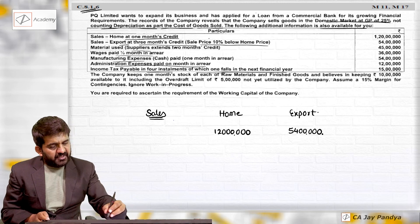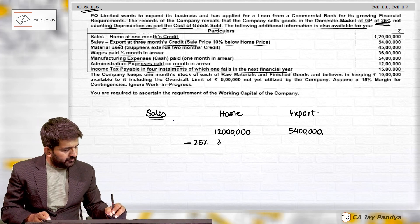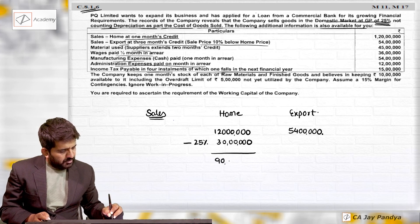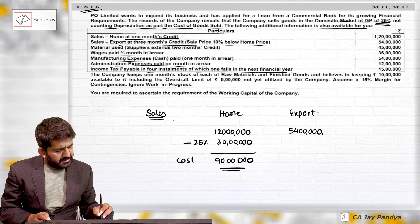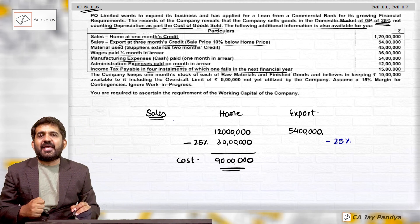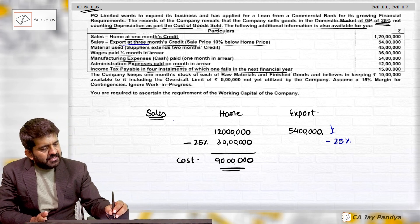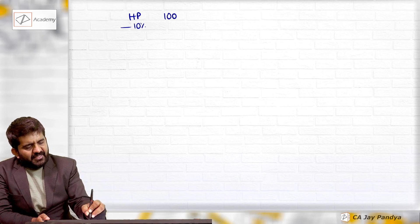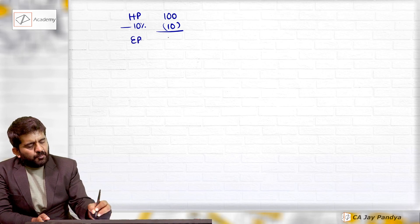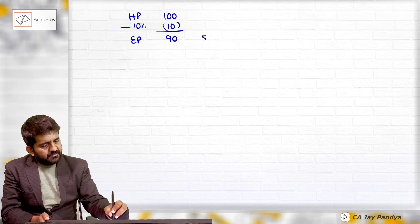Can I reduce the profit from home sales? Yes — GP of 25 percent, so cost of domestic sales is 90 lakhs. For export sales, the selling price has changed, so I need to find the cost of 54 lakhs. Export sales price is 10 percent below home price, meaning if home price is 100, export price is 90.